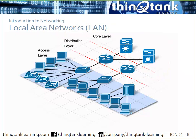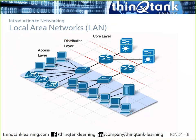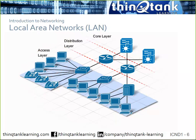Then we have our access layer, where we have our layer two devices — typically our switches — and that's where our clients are connected. At the access layer, we extend VLANs and apply port-based security like 802.1X or switchport security. This is where we connect our phones, PCs, printers, and anything else connecting to the network.